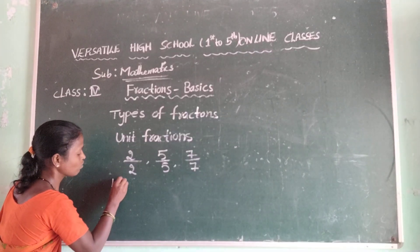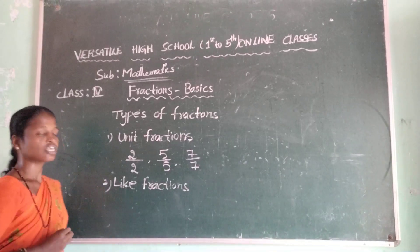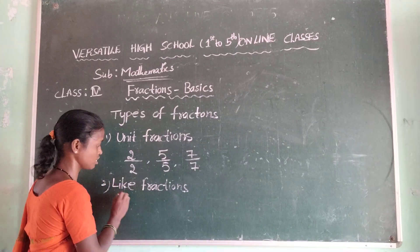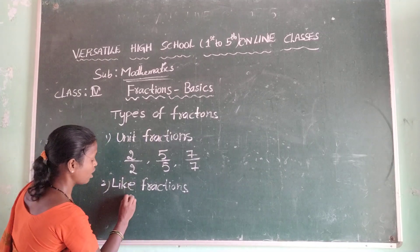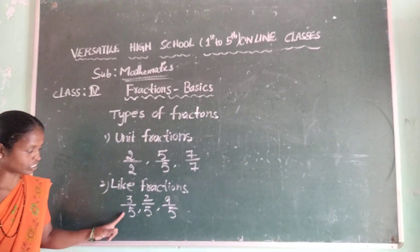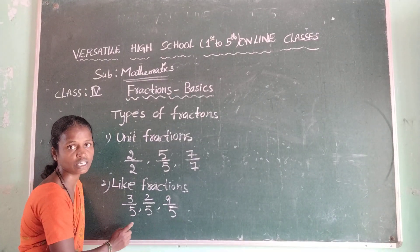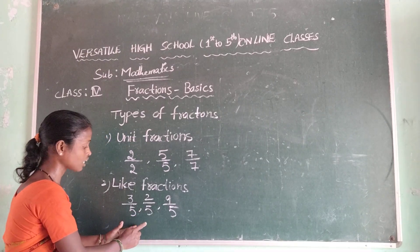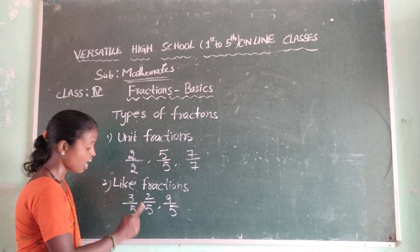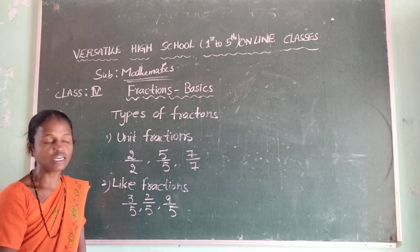Another type is like fractions. When we are taking two or more fractions — suppose three by five, two by five, nine by five — observe those fractions. What is the denominator of the first fraction? Five. Second? Five. Third? Five. The denominators are the same. So we are saying this type of fractions are called like fractions — when two or more fractions have the same denominator.